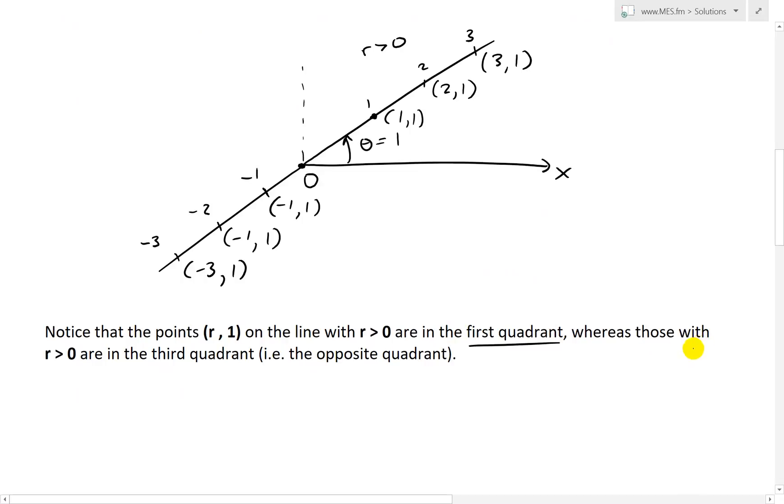where all of these points here are in the first quadrant to the right, and whereas those in the r is less than 0. This is a typo, not greater than.